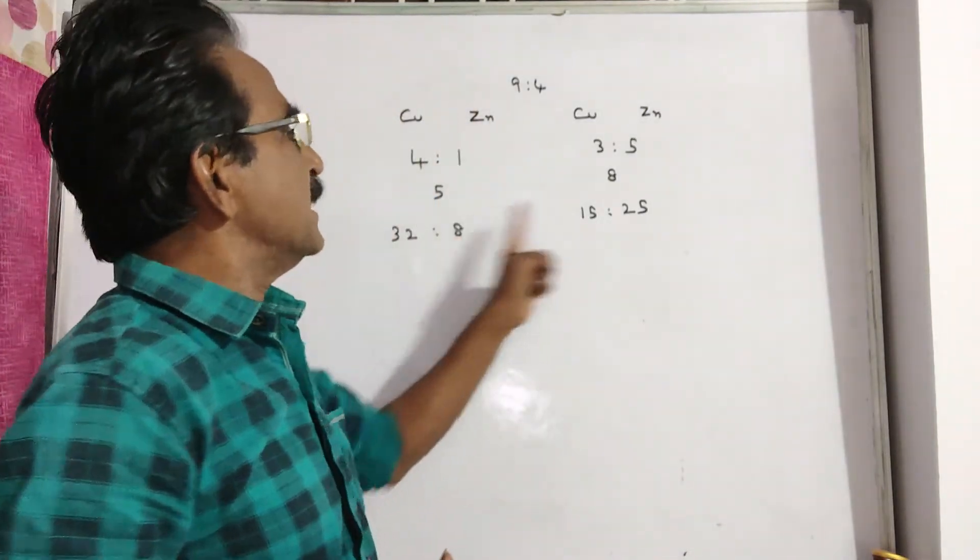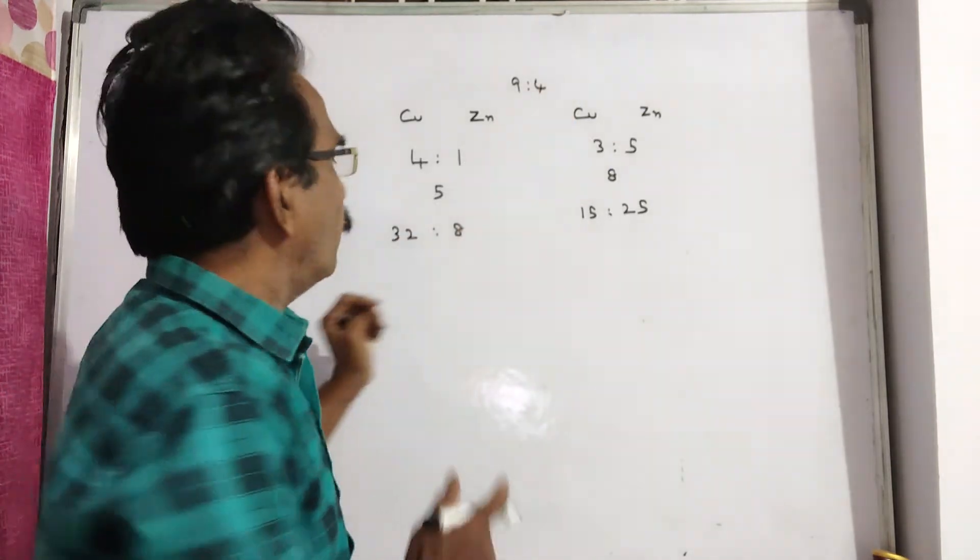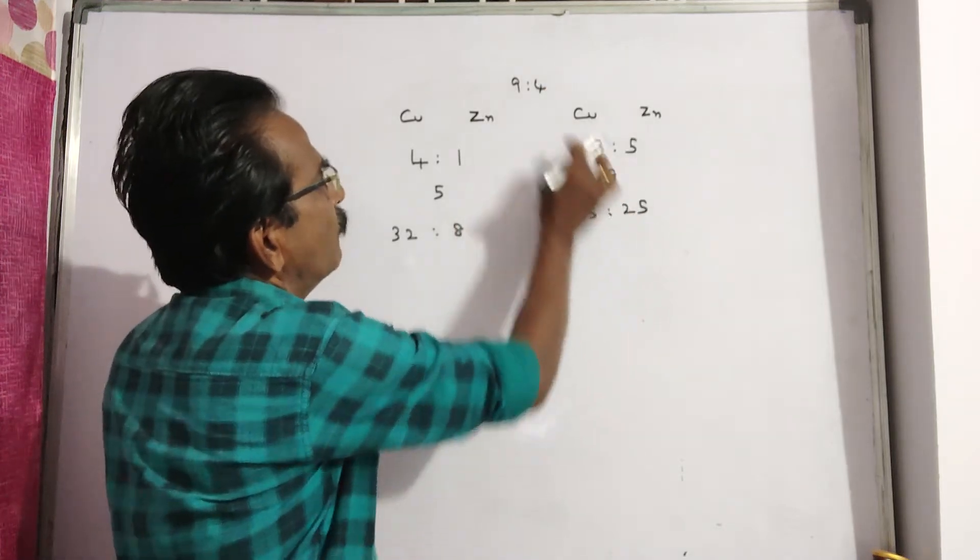After that, these two alloys are mixed in the ratio 9 to 4. So, multiply this with 9. Multiply this with 4.